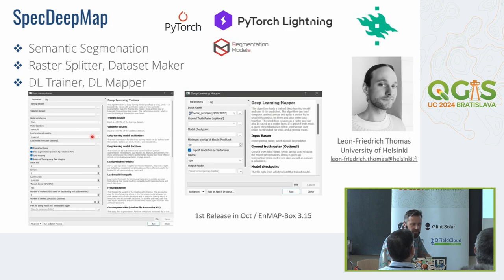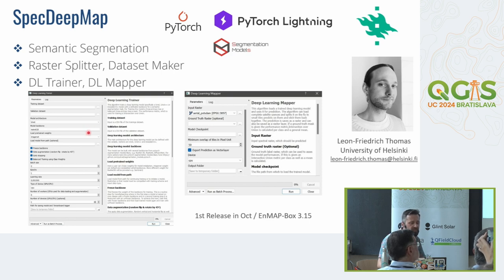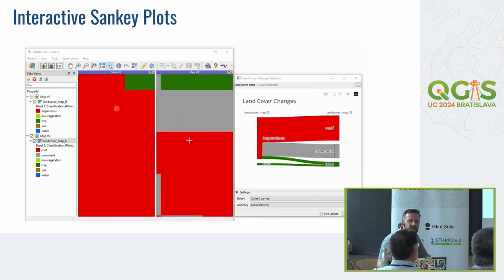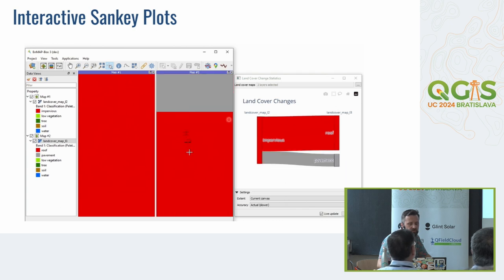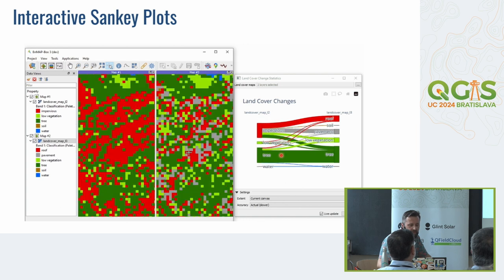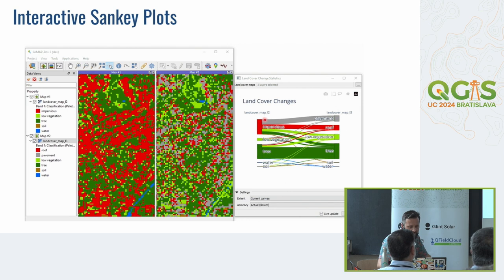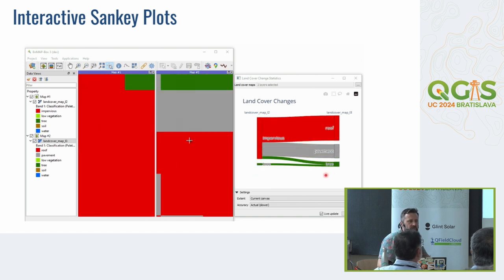We also provide two new tools. The first is the SpecDeepMap application developed by Leon Friedrich from the University of Helsinki, related to semantic segmentation using the PyTorch framework — to prepare data for training a deep learning model and then apply that model to hyperspectral or any spectral data. The second tool helps you compare land cover maps to visualize how land cover has changed relative to the currently shown map canvas extent, using Sankey plots.